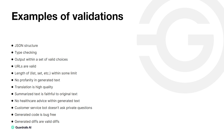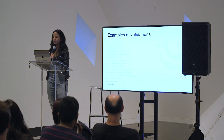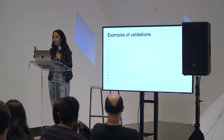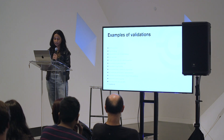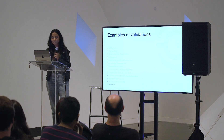Here's a high-level overview of examples of validators that exist in the package or that you can create yourself: very fundamental things like JSON structure and type checking; making sure URLs being generated are valid and relevant to the text; ensuring no profanity in generated strings; verifying that translations are high quality; that summarizations are faithful to the original text with all salient points captured; that a healthcare chatbot contains no prescriptive healthcare advice; that a customer service bot doesn't ask private questions; and that generated code is bug-free.